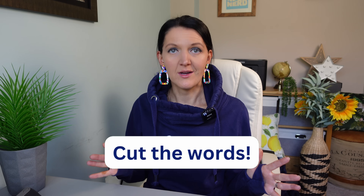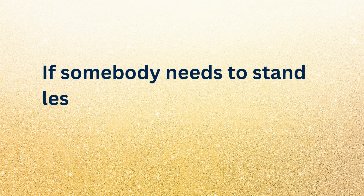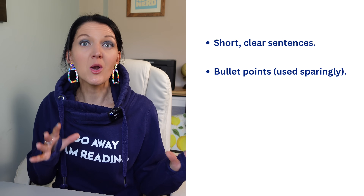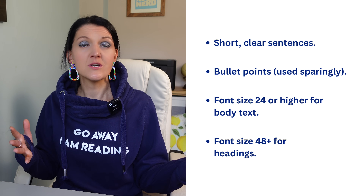Next up — cut the words. This is a big one. So many posters I've seen at conferences literally have essays pasted onto them. Nobody wants to stand there reading a thousand words in font size nine while juggling a cup of lukewarm tea and their conference tote bag. Here's the golden rule: if somebody needs to stand less than a metre away to read your text, it's too small. Aim for short, clear sentences, bullet points used sparingly, font size 24 or higher for body text, and font size 48 or more for headings. And when people say they've got so much to say they can't fit it unless they make the text smaller — well, that's what the conversations around the conference posters are for.